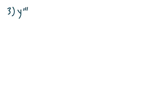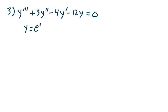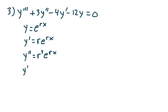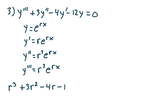Let's take a look at example 3. Suppose I had y triple prime plus 3y double prime minus 4y prime minus 12y equals 0. Again, let y equal e to the rx. y prime is r e to the rx. y double prime is r squared e to the rx. Making my substitution and dividing by e to the rx, I get r cubed plus 3r squared minus 4r minus 12 equals 0.